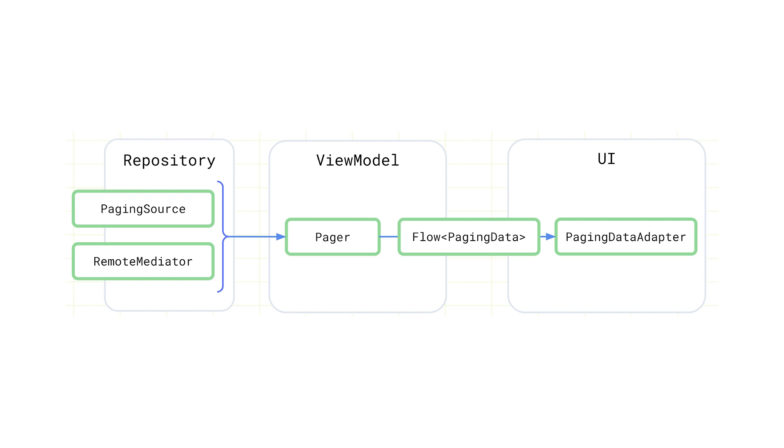Once it's set up, we only need to let the data stream flow through. There's no need to worry about how and what the paging library is doing. Debugging is also less of a hassle with the paging library, as we only need to focus on the implementation of the paging source. Usage of breakpoints inside a paging source allows us to gain a lot of insights, because they're just suspending functions.